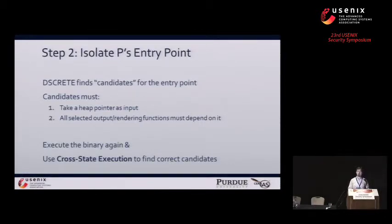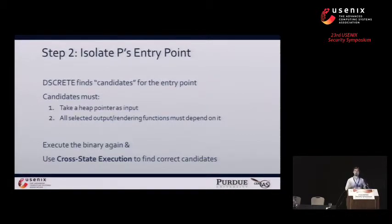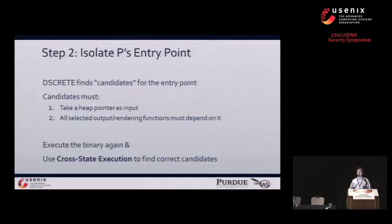So to actually perform this step, the investigator is going to execute the binary one more time, and in the background Discrete is going to be testing each of these entry point candidates using a process that we call cross-state execution. This is where that memory image taken in step one comes in. During cross-state execution, Discrete is going to selectively and automatically force the application to access data in both its new memory session as well as the memory session frozen in that memory image.